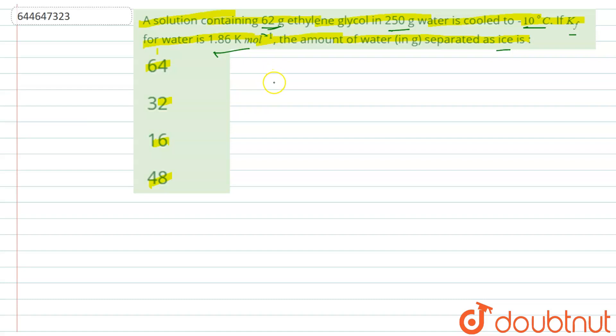Now to solve this question, firstly, let us calculate the depression in freezing point upon addition of the ethylene glycol. So we know that generally the freezing point of water is 0 degree Celsius.